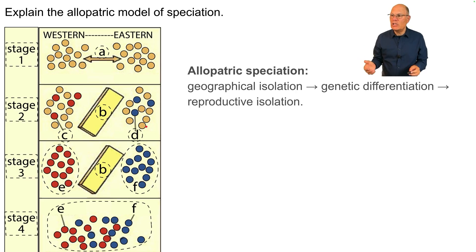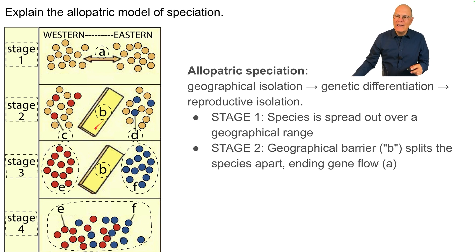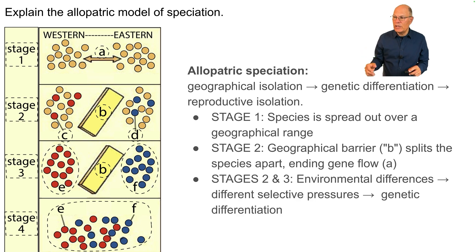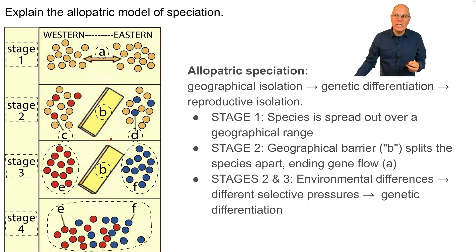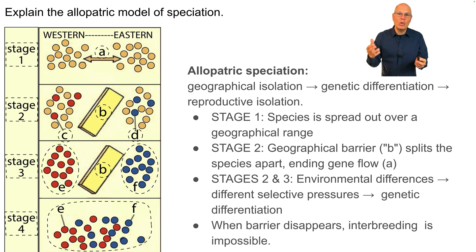In allopatric speciation, geographical isolation leads to genetic differentiation, which leads to reproductive isolation. In stage one, a species is spread out over a geographical range with gene flow between subpopulations. In stage two, a geographic barrier arises and splits the species apart, ending gene flow between the isolated populations. Environmental differences result in different selective pressures, leading to genetic differentiation through mutation. Finally, when the barrier disappears, the two formerly separate subspecies have become so different that they can no longer interbreed.